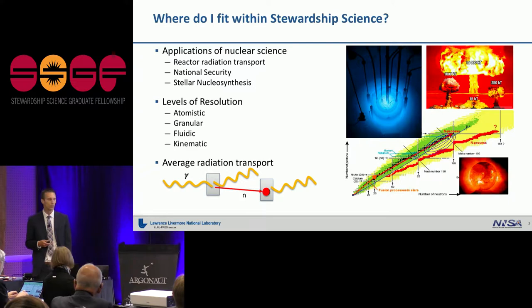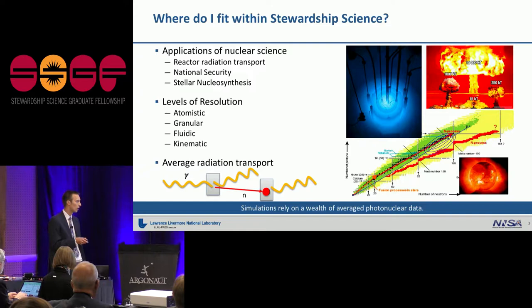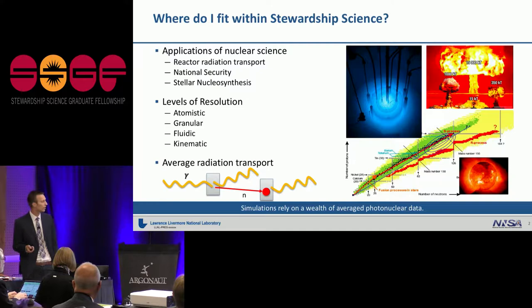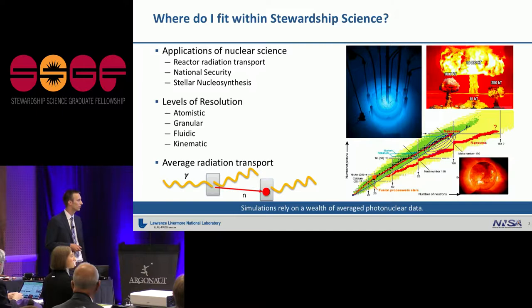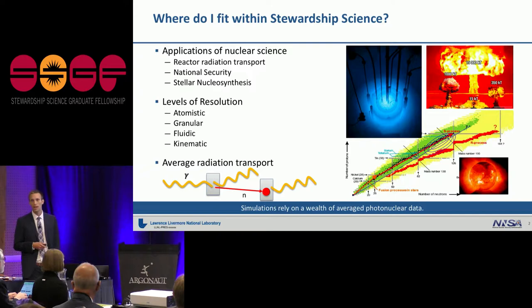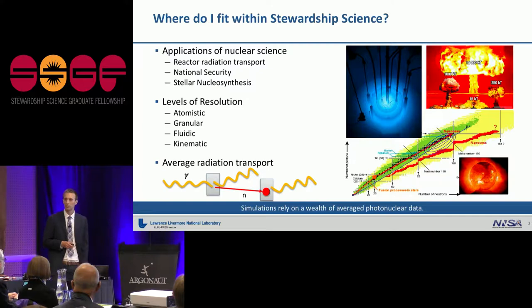I study individual interactions of radiation with matter. So we want to know how gamma rays transport through, maybe it's a cloud of debris or a reactor or a star. As these gamma rays pass through the material, they either are going to generate more gamma rays, or they might have enough energy to liberate a neutron from the nucleus. And the simulations that we do rely on a wealth of nuclear data. So I don't study every single gamma ray that's possible of coming out. I study a more averaged approach to modeling this transport.